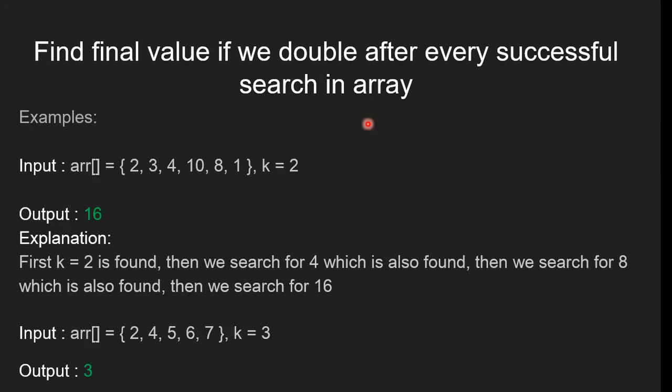Let's clarify with examples. In the first example, the input array is [2, 3, 4, 10, 8, 1] and k equals 2. The output should be 16. Since k = 2 is present in the first position of the array, we double the value of k to 4.